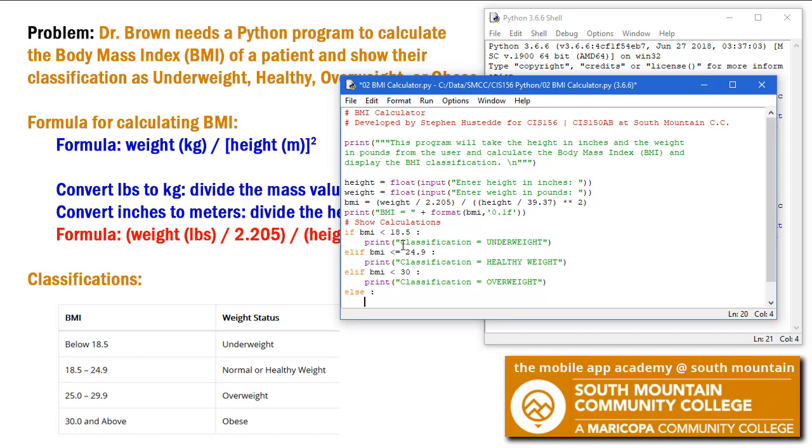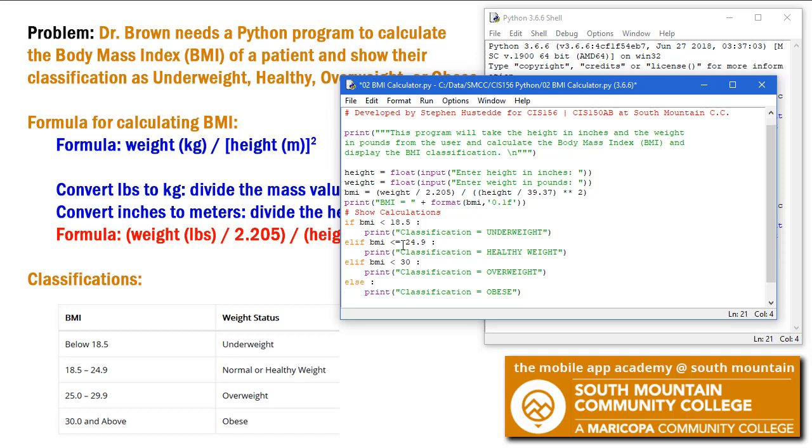And then we'll just do an else because it's going to be above 30. And our else in this case, we're going to print out classification equals obese. And that will be the end of our program.